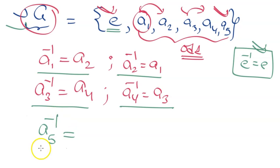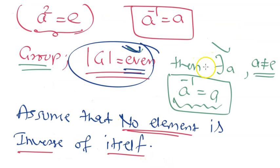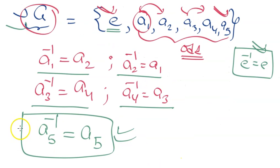So who is remaining to be the inverse of a5? The only remaining element is a5 itself. So the inverse of a5 must be a5 - it must be its own inverse. This is what we wanted to prove: there is at least one element who is the inverse of itself. We can see that a5 is the inverse of itself. So this completes the proof.